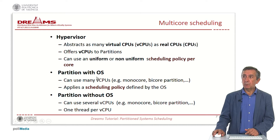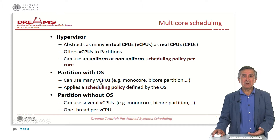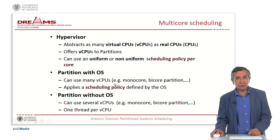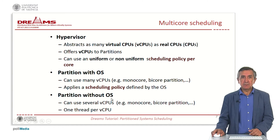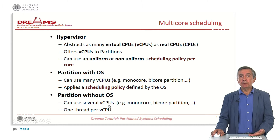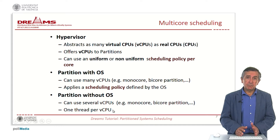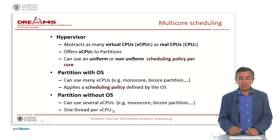In a partition with an OS, since we can use several virtual CPUs, we can have monocore or multicore partitions and the operating system provides a scheduling policy. In a partition without an OS, we can also have several virtual CPUs, and from the execution perspective we can have one thread per virtual CPU.